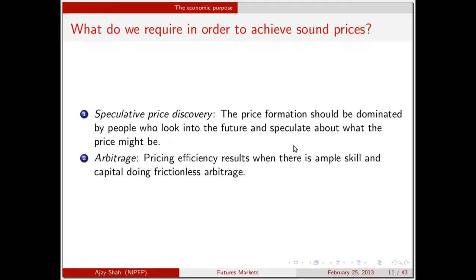To achieve sound prices we need two things. First, speculative price discovery: people who look at October and March, make forecasts, and trade in the market. Second, we need lots of arbitrage. The arbitrage constrains and disciplines the price — there are certain prices that are just not feasible, and arbitrage rules them out. We need lots of people who look at the world, make forecasts about the future, and have the guts to put their money where their mouth is.